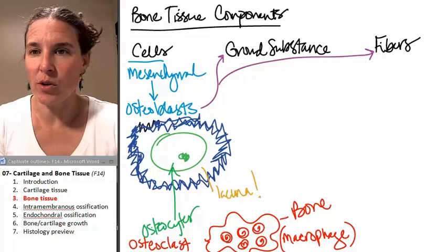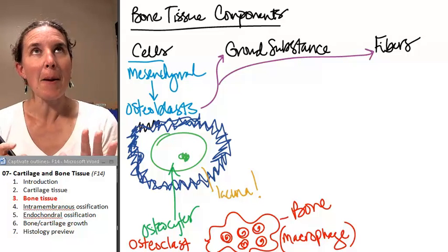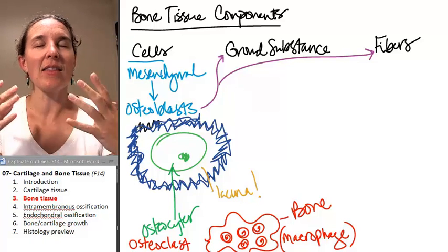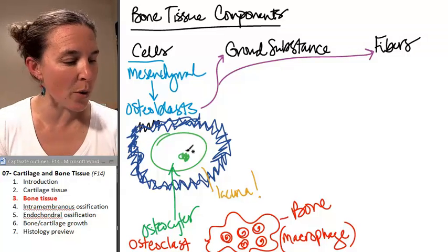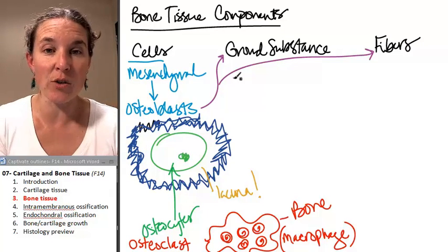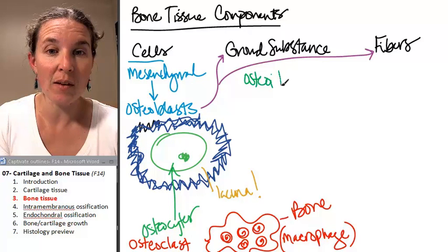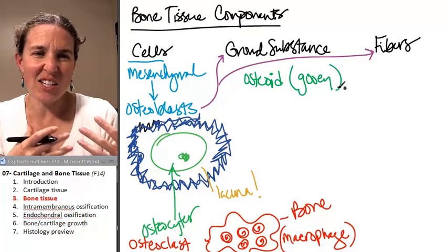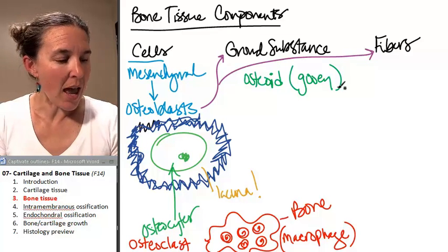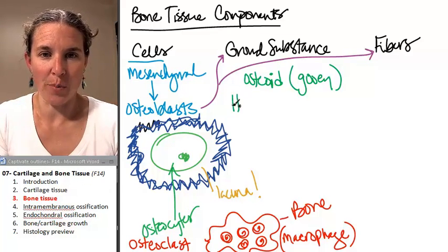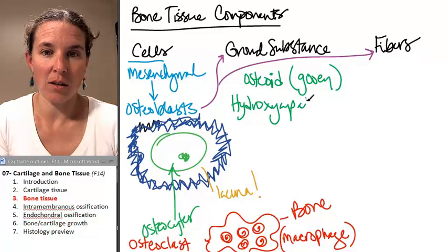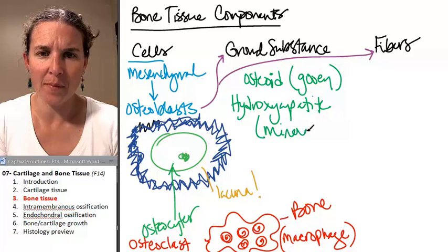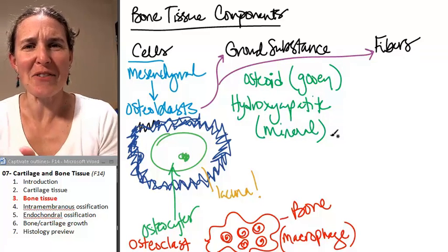Okay. We also have ground substance. Our ground substance has a couple of components. And these two components are different, but the concentrations that we throw in there are going to tell us about the nature of the bone. So the two substances we're going to find in the ground substance are osteoid, and osteoid makes me think gooey. Doesn't osteoid sound like a gooey word? As opposed to hydroxyapatite, really? Hydroxyapatite is brittle and hard. It's a mineral.